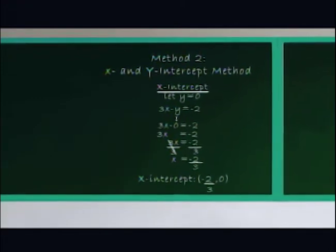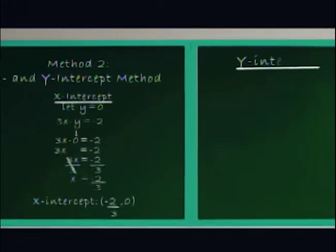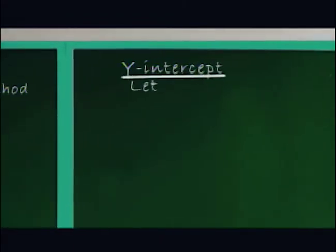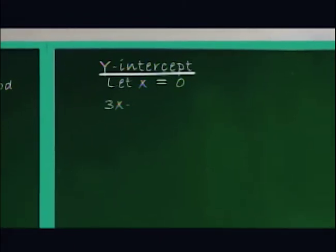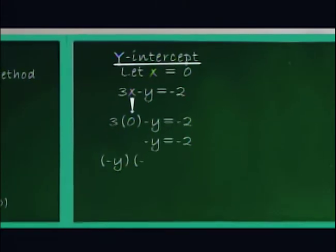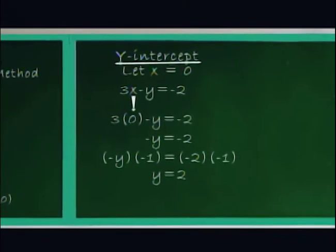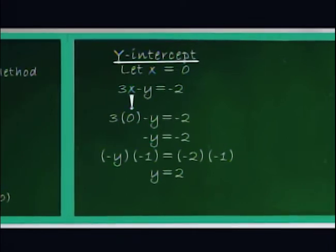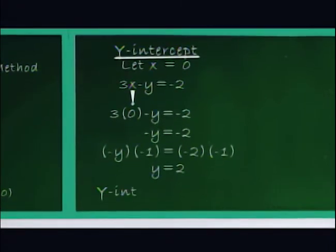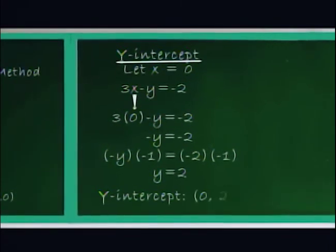In the same way, to find the y-intercept, we let x be equal to 0 and solve for y, and we get y equals 2. Therefore, the y-intercept is 0, 2.